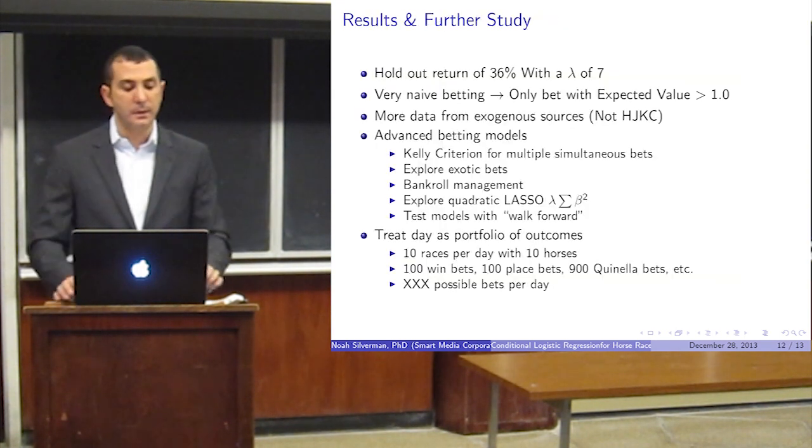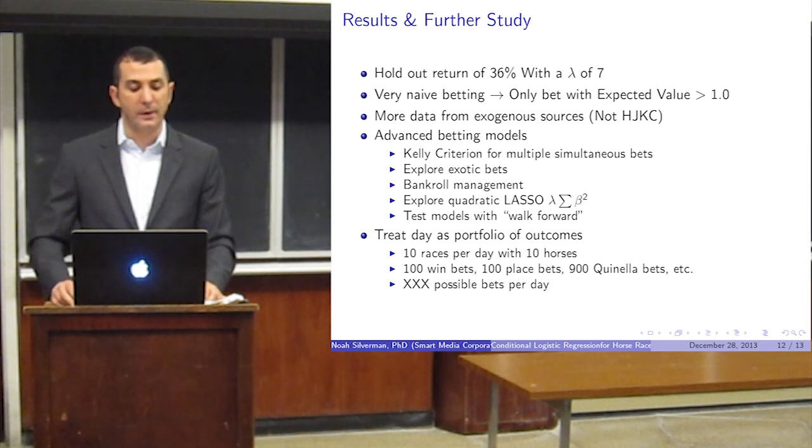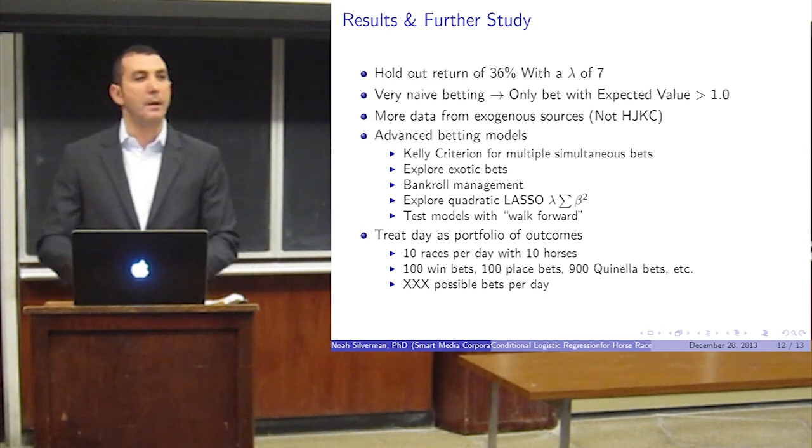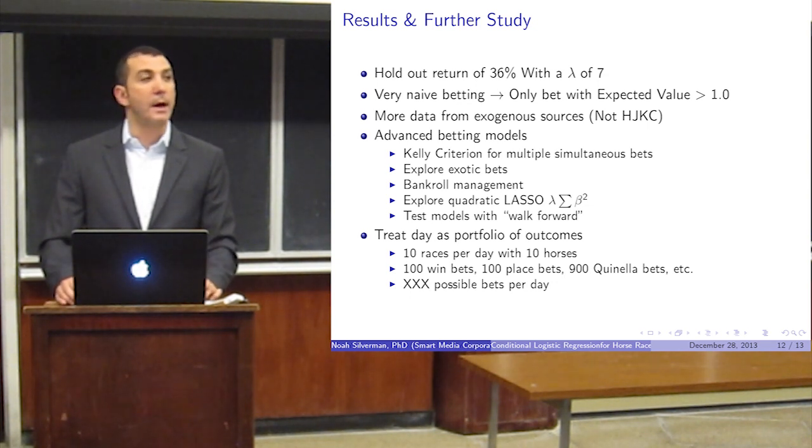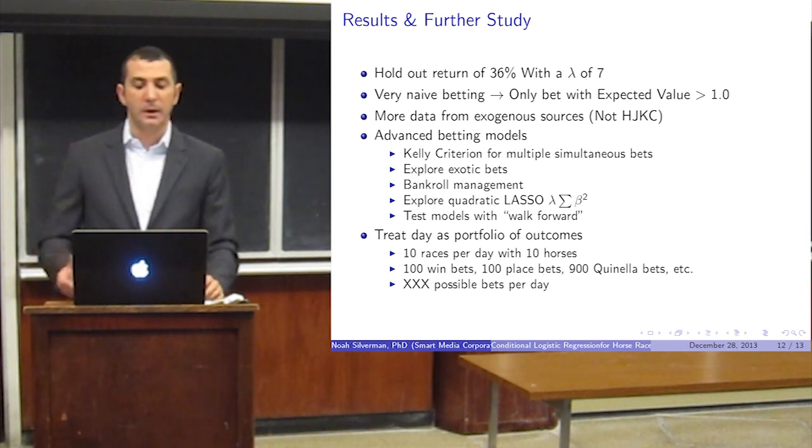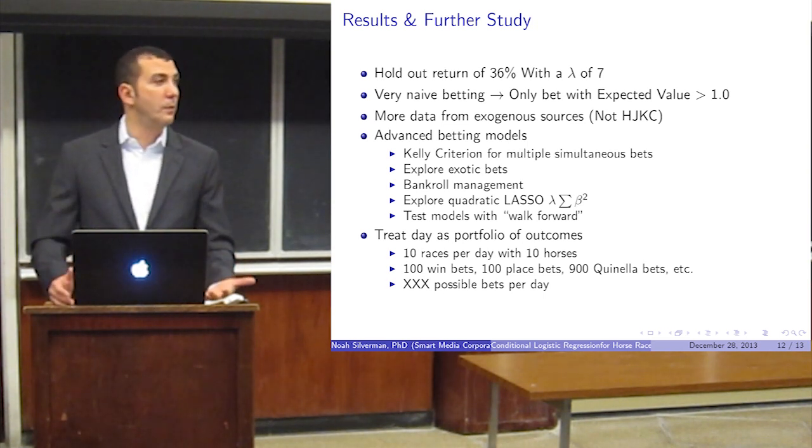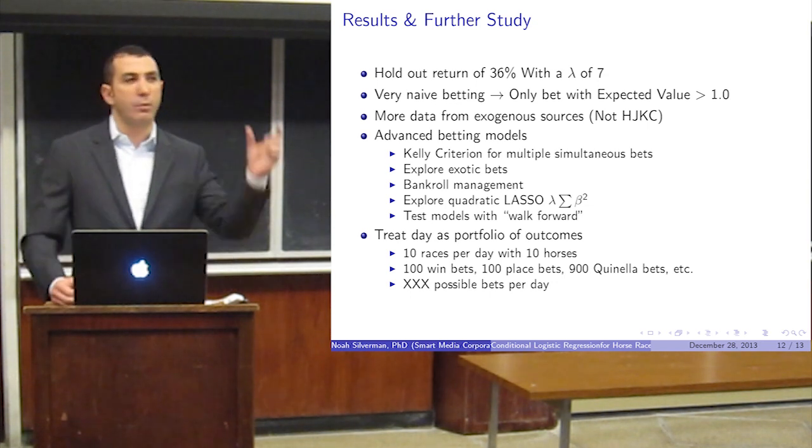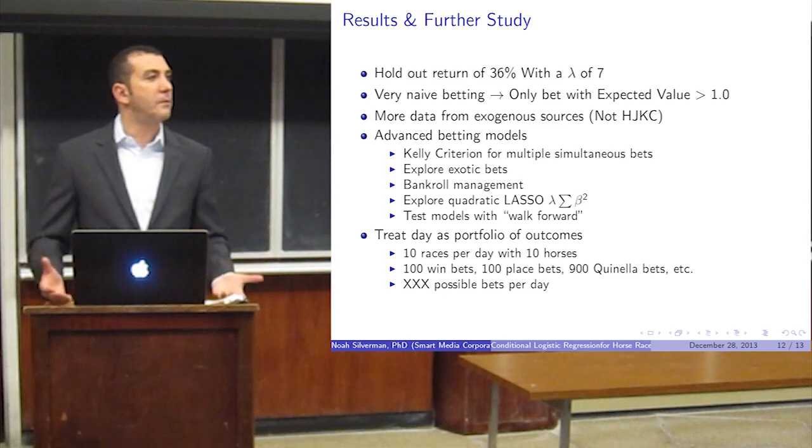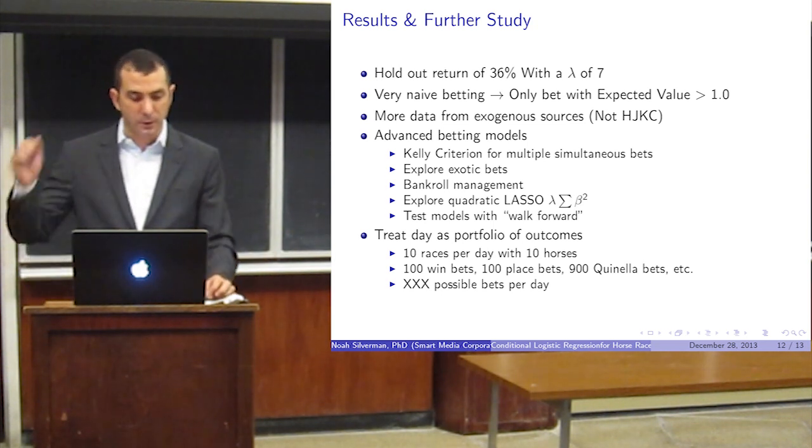The optimal lambda is 7, and it has a holdout return on investment of 36%. Now, I don't expect to get that in real life. I'm sure there's some overfitting going on here. It doesn't look at drawdown for your actual bankroll and stuff like that. It's also a very naive betting strategy. Basically, we took the expected value of a bet. An expected value is the probability of the outcome times the money you would win. Anything with an expected value greater than one is a bet you want to make. So we made that bet.